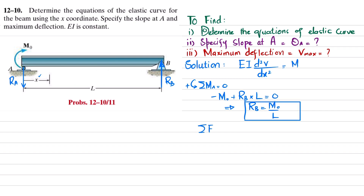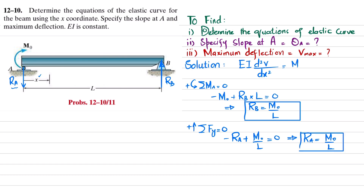Now find R_A using sum of all forces in the Y direction equal to zero, taking upward as positive. R_A is downward, so −R_A + R_B = 0, and since R_B = M₀/L, we get R_A = M₀/L.